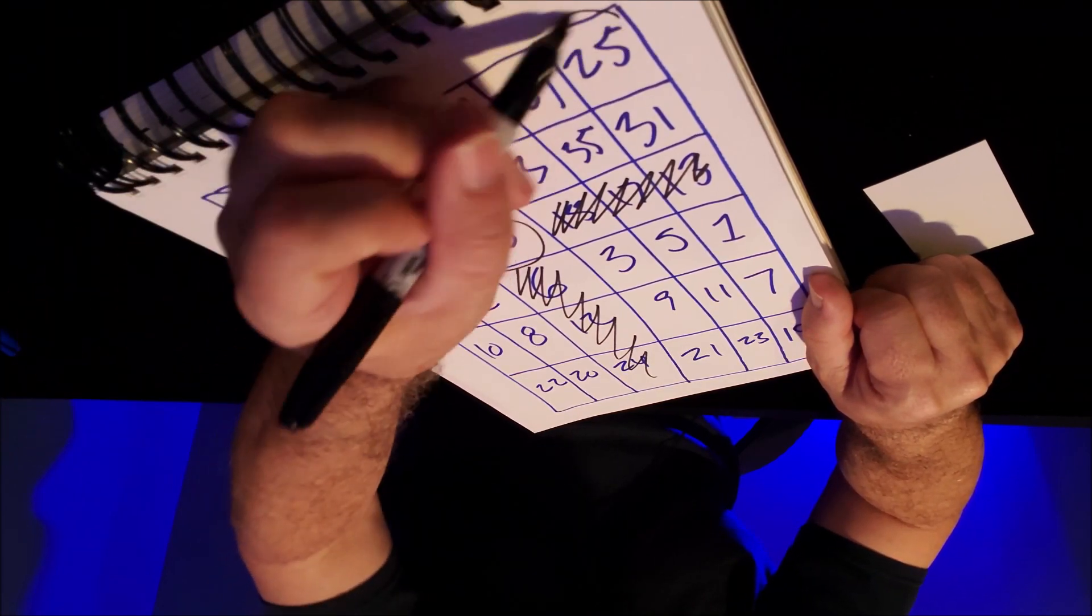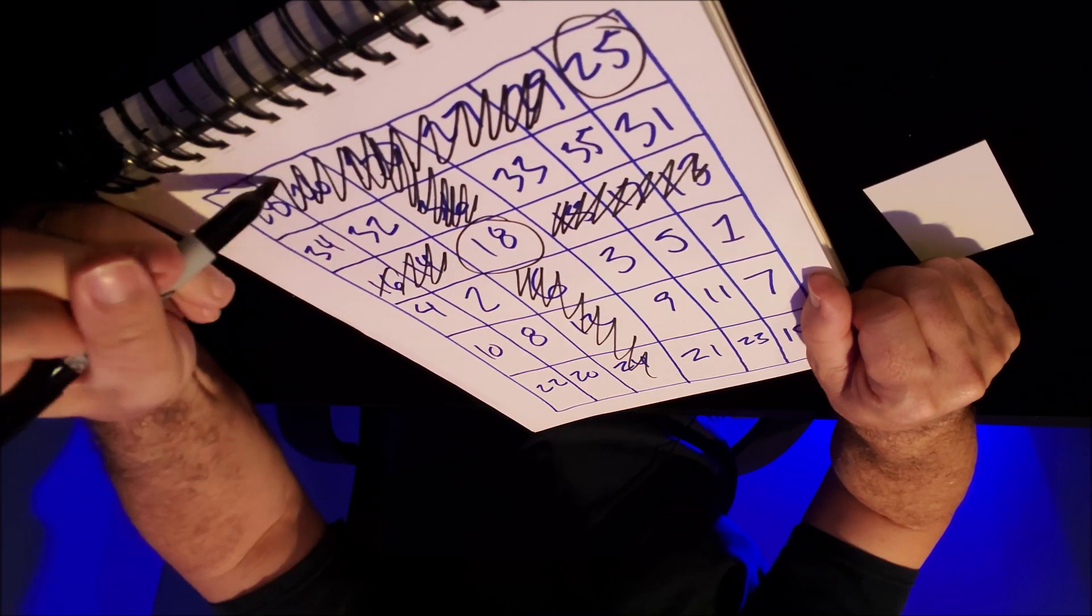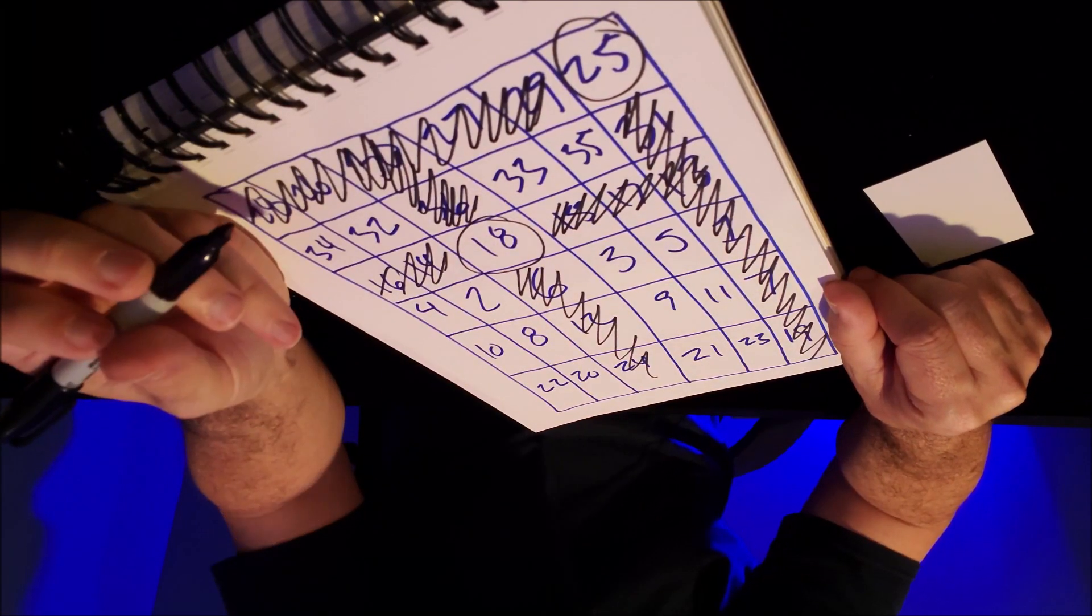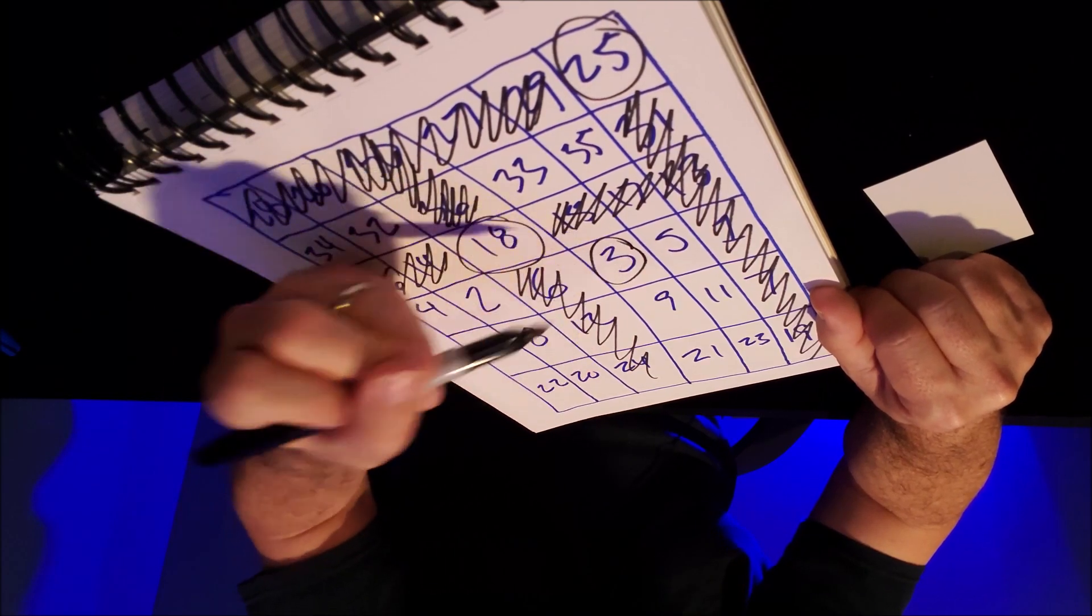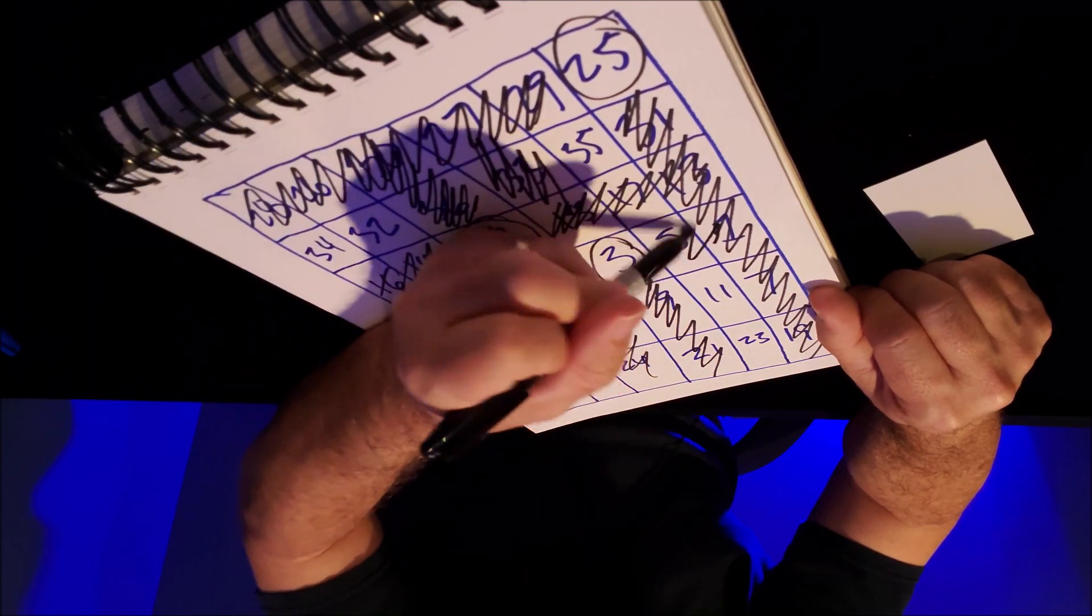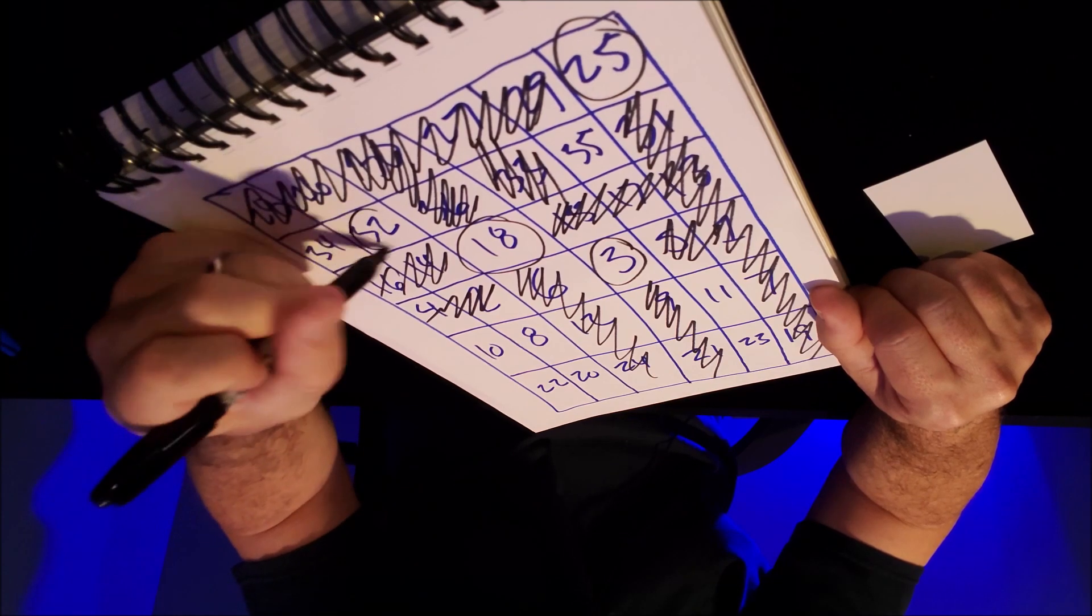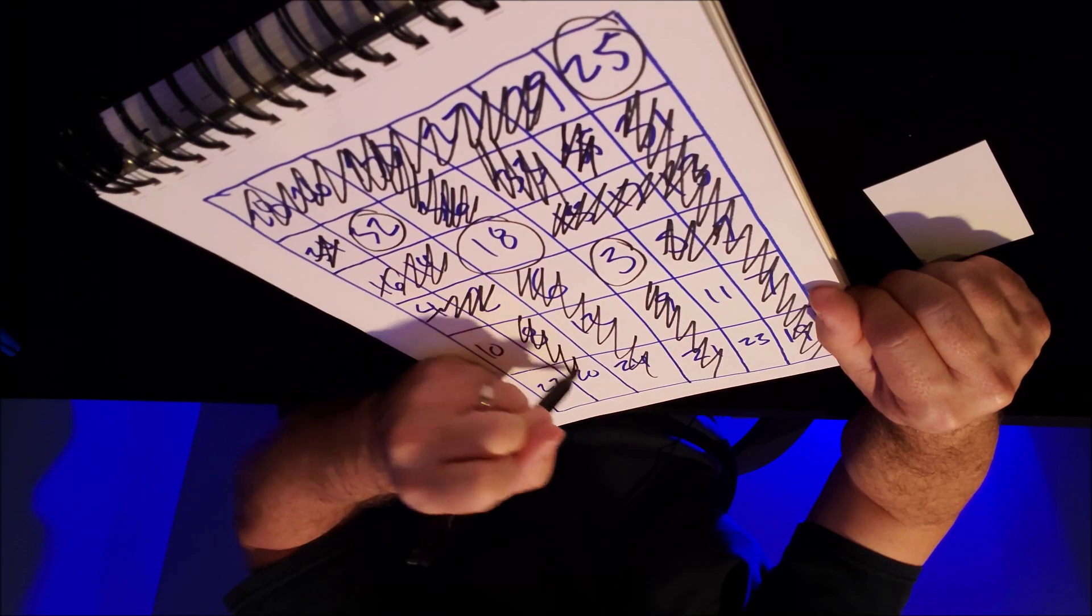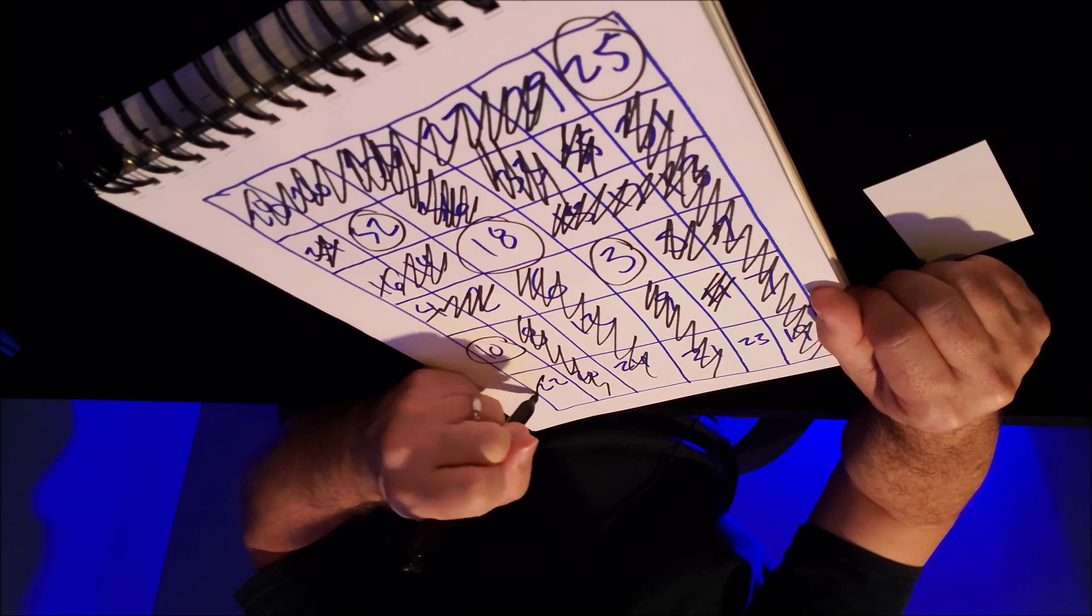Then they're going to cross out all the numbers that aren't circled that are in the same row, and they're going to cross out all the numbers that are in the column above it, which means we'll cross out all of these. Now they're going to do it again. Circle any number you'd like. Let's say they circle 25, which means they're going to cross out all of these and all of these. You can cross these out for them just so they understand. Then you'll give them the option again. Circle any number. Let's say they circle 3.